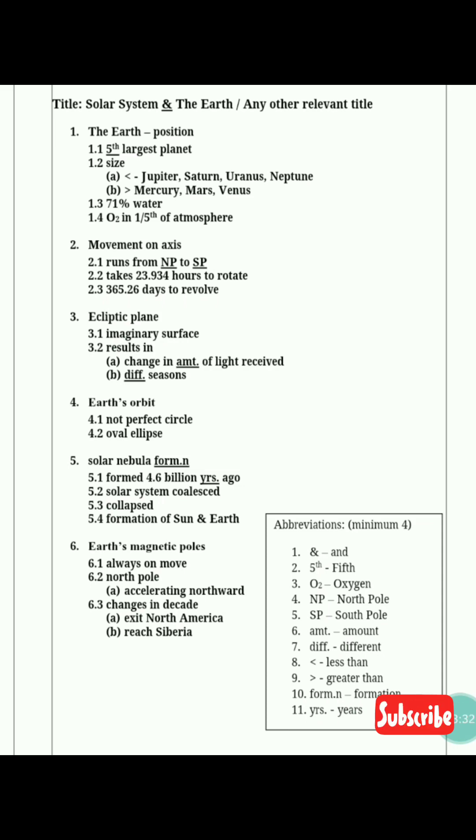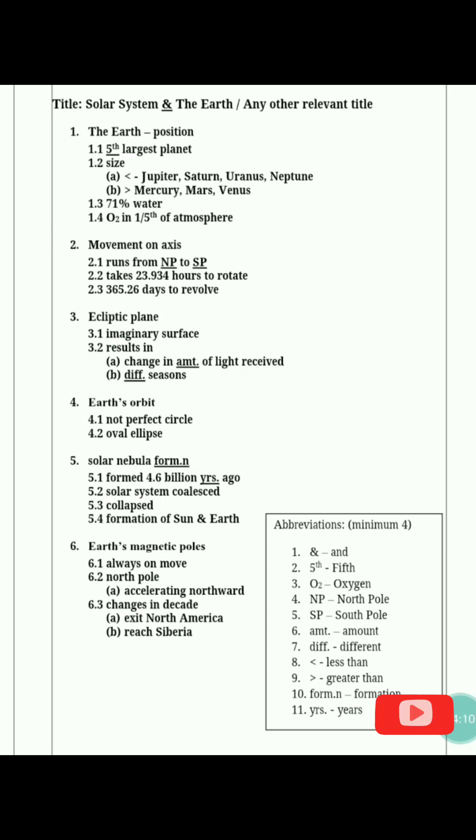The 4th, 5th, and 6th paragraphs I had asked you to read on your own. However many paragraphs a passage has, that many headings your notes should have. Heading 4: Earth's orbit. Sub-heading 4.1: not a perfect circle. Sub-heading 4.2: oval/ellipse. From the 5th paragraph we take: 'Solar nebula formation.' Sub-heading 5.1: formed 4.6 billion years ago. Sub-heading 5.2: solar system. Sub-heading 5.3: collapsed. Sub-heading 5.4: formation of sun and Earth.